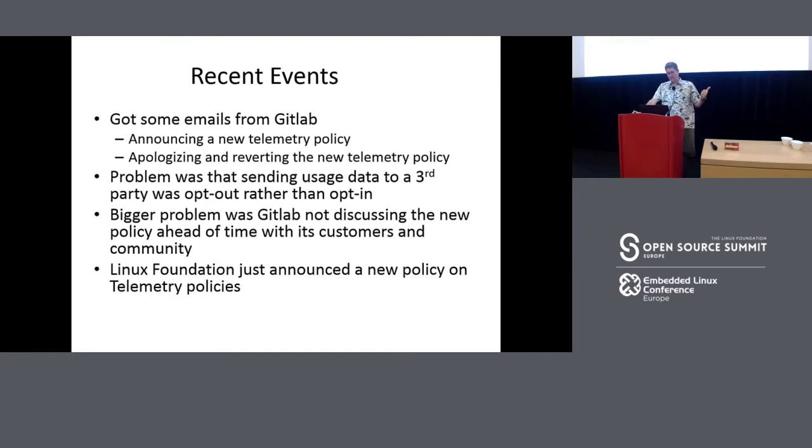There were two problems. I want to give credit to GitLab for reversing that policy. Problem number one was that they were sending usage data potentially to a third party and the default was opt out instead of opt in. The bigger problem, according to the GitLab CEO, was that GitLab didn't discuss this enough ahead of time with their customers and with the community. The Linux Foundation just announced this week a new policy on telemetry policies saying that they really ought to be opt-in instead of opt-out.